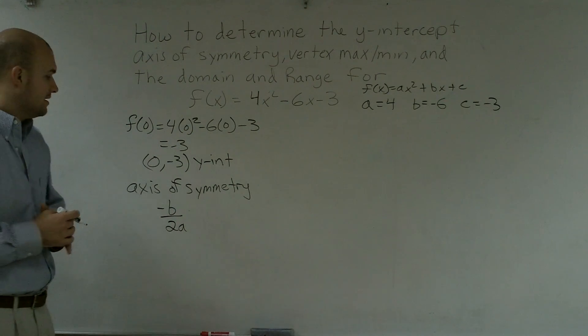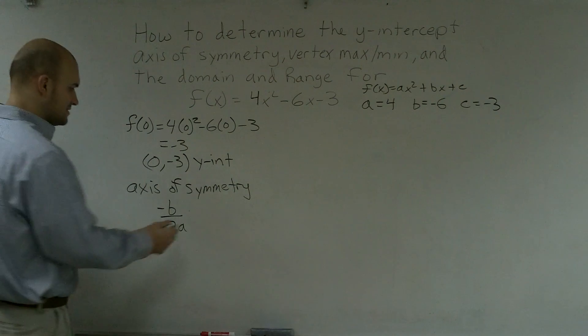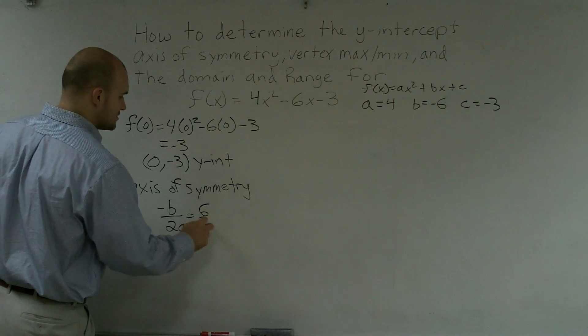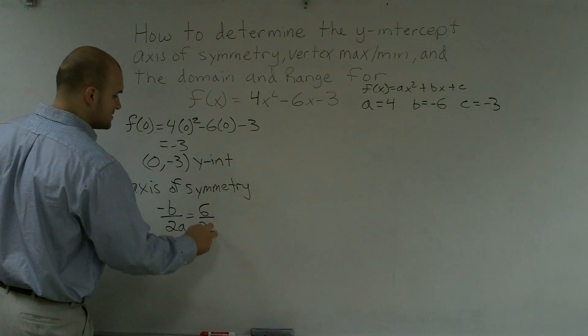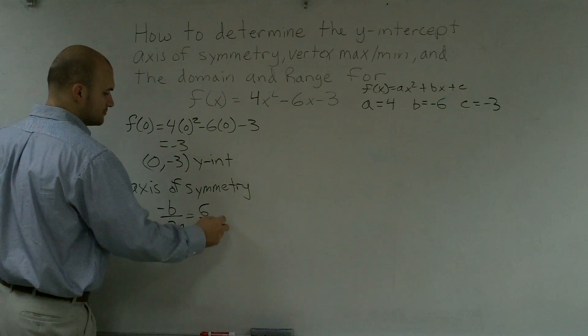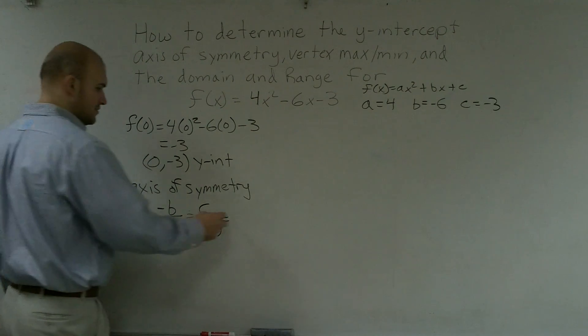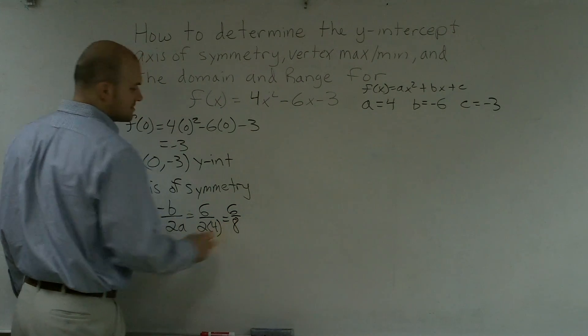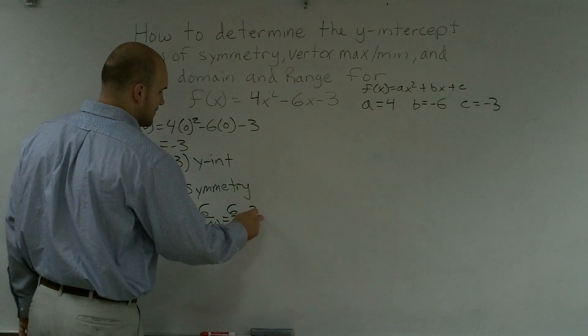So all we have to do is just take what our a and b are, and then plug them in. So that's going to equal 6 over 2 times 4, which is equal to 6/8, which can be reduced down to 3/4.